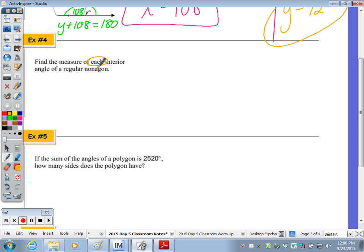Number 4. Find the measure of each interior angle of a regular nonagon. I don't know the sum off the top of my head, so n minus 2 times 180 divided by 9. 9 minus 2 is 7. You can cross-cancel here. How many times does 9 go into 180?